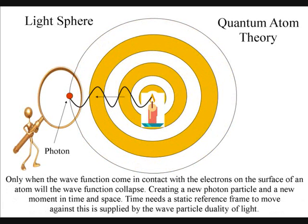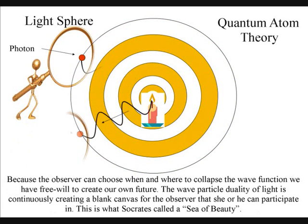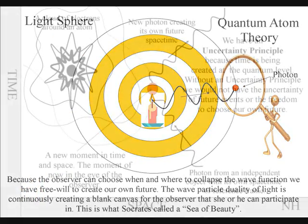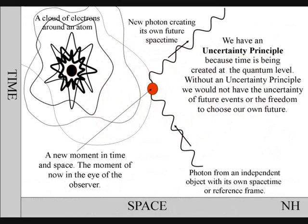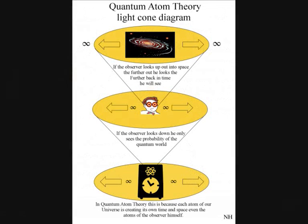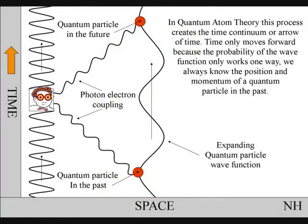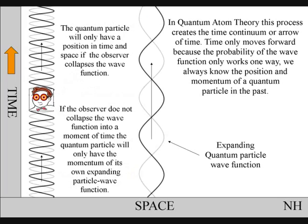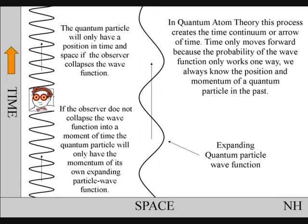Because the observer can choose when and where to collapse the wave function, we have free will to create our own future. The uncertainty principle of quantum physics is the same uncertainty that the observer will have with any future event. The quantum particle will only have a position in time and space if the wave particle function collapses. If the observer does not collapse the wave particle function into a moment of time, the quantum particle will only have the momentum of its own wave particle function.